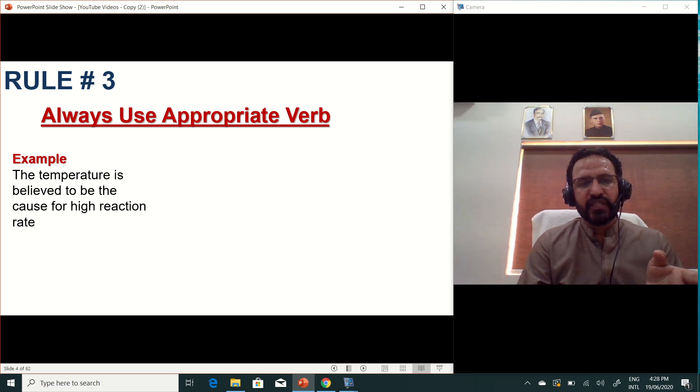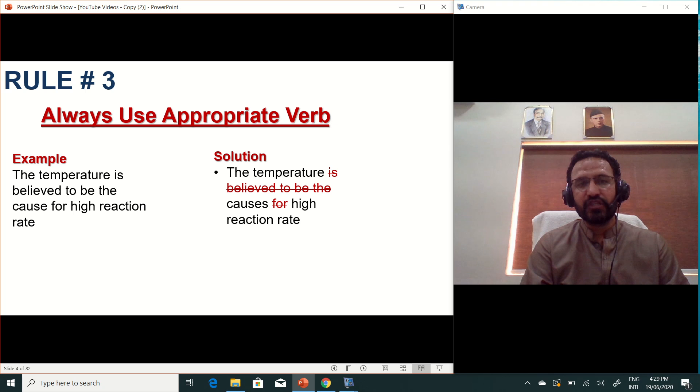For example, we say that temperature is believed to be the case for high reaction rate. This is just one example. You can see that we have not used the backbone verb. Rather, we have converted it into passive voice and then we are not finding our balance. You can solve it like: the temperature causes high reaction rate. Here, 'causes' is actually your verb.